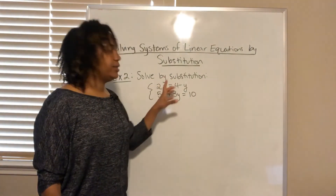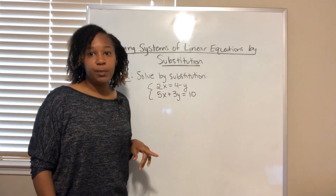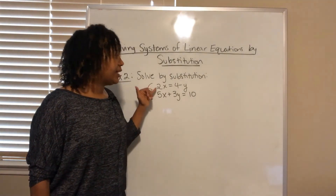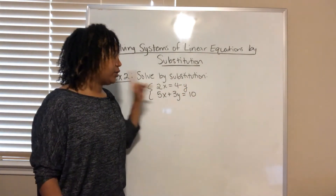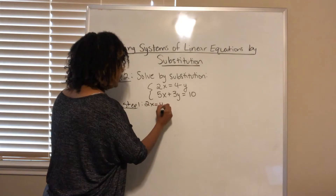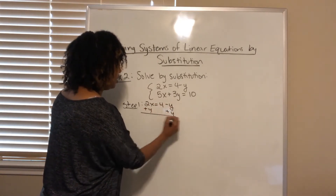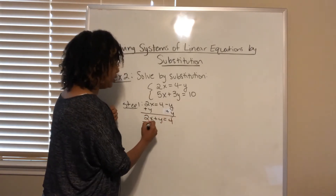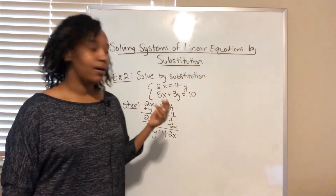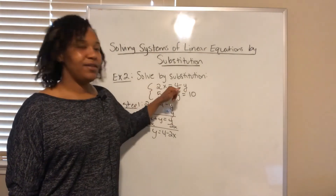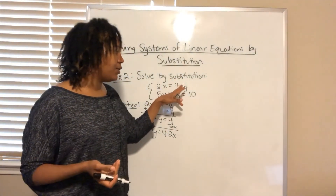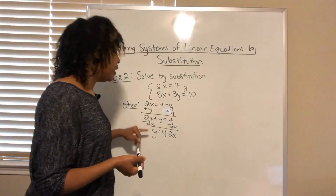Let's do another example. Solve this system by substitution. The first thing we do is pick a variable to solve for — it's good to pick one without a coefficient. The only variable without a coefficient is the y in the first equation, so I'll solve for y there. Taking that equation, I add y to both sides to get 2x plus y equals 4, then subtract 2x to get y equals 4 minus 2x. I could have solved for x, but that would introduce fractions — solving for the variable with no coefficient avoids fractions.